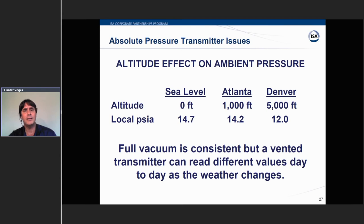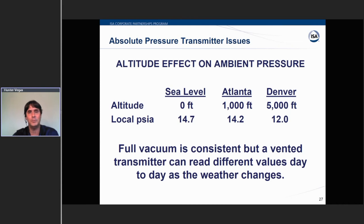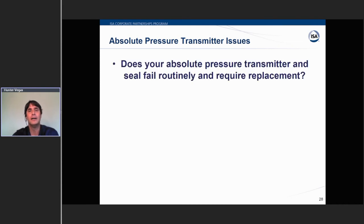For absolute pressure transmitters: a full vacuum is a full vacuum everywhere in the world — that's straightforward. It's the vented side, zero PSIG, that drifts and changes by location. At sea level, 14.7 PSIA is ambient; in Atlanta it's 14.2; in Denver it's about 12. It also moves with the weather — if you calibrate it flawlessly today and a cold front comes through, the reading can drift because vented today is not the same as vented yesterday.